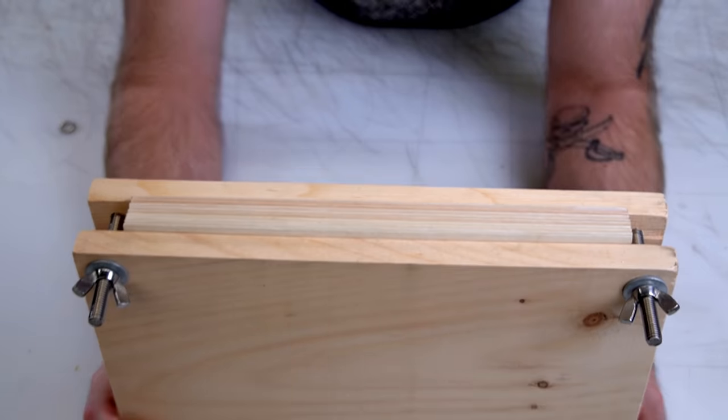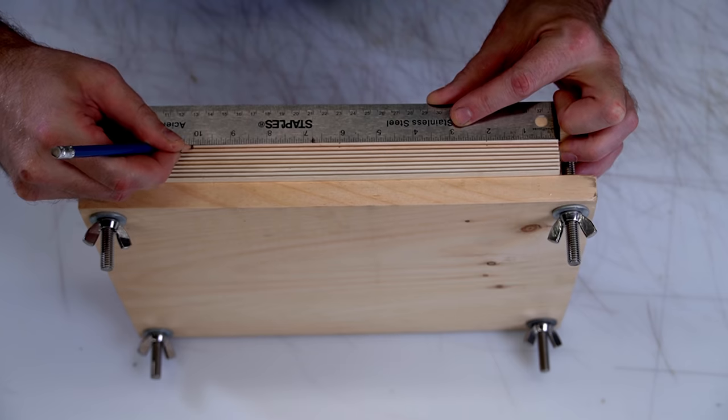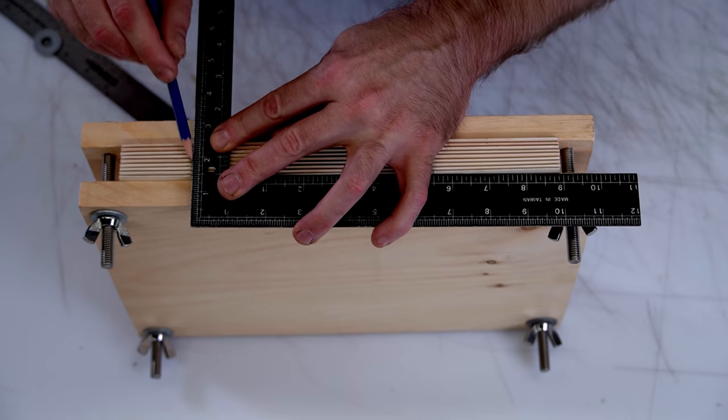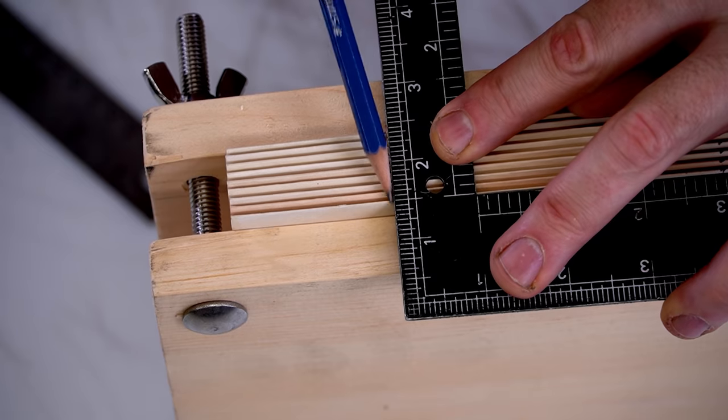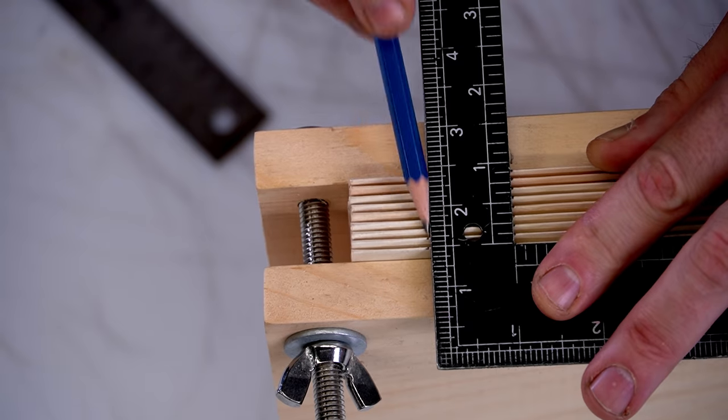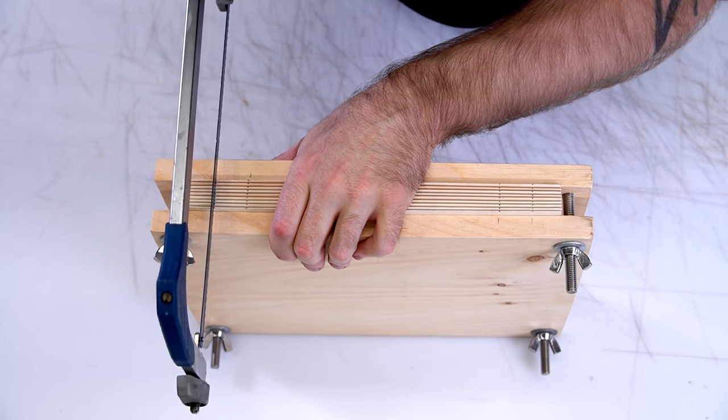And of course, the more pages you have in each individual signature, the more sawing you have to do. So when I did this, I didn't saw through all the pages and had to do some makeshift hole punching at the end that you'll see here. So keep that in mind with how many pages you put in each signature.